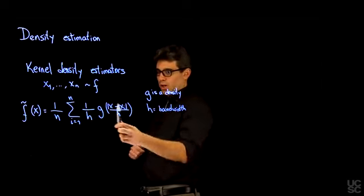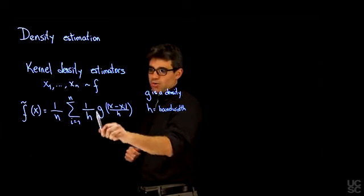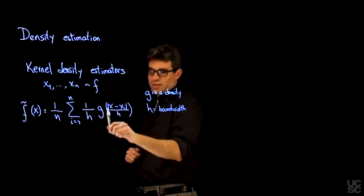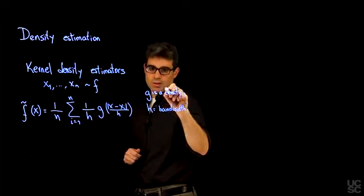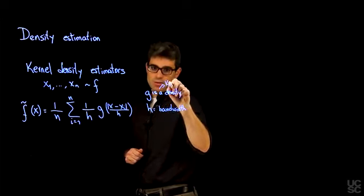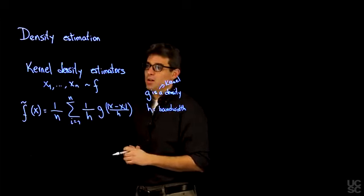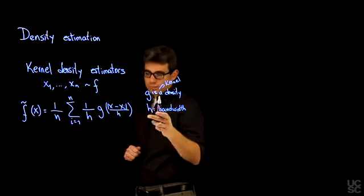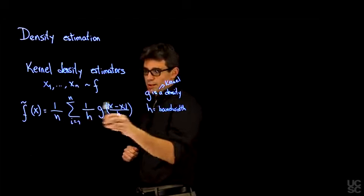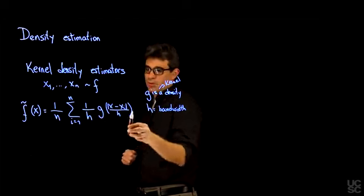As I said, you may be already familiar with this type of approach for density estimation. You have an average of these kernels and that's how you typically refer to this. G is typically called the kernel of the density estimator.